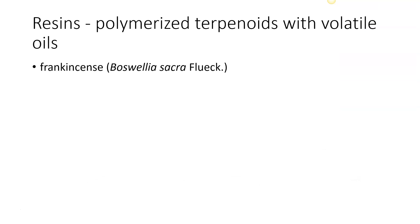When we look at resins there are a lot of different types. Clearly they are polymerized terpenes with volatile oils. The first is frankincense. Look at the word — you can see the word incense in it. Incense is a material that we set fire to that releases certain fragrances. Frankincense is a biblical type material collected from the plant Boswellia sacra, sacra meaning sacred. It was often used as an incense to impart fragrance into the air.